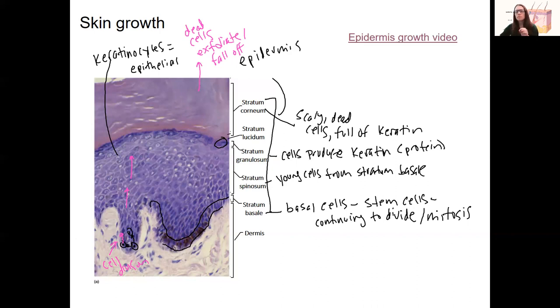In the stratum lucidium and the stratum corneum, cells start to lose their nuclei. So at this point, these dead cells, what I mean by that is they have lost their nuclei. They kind of pop out and all the other organelles.